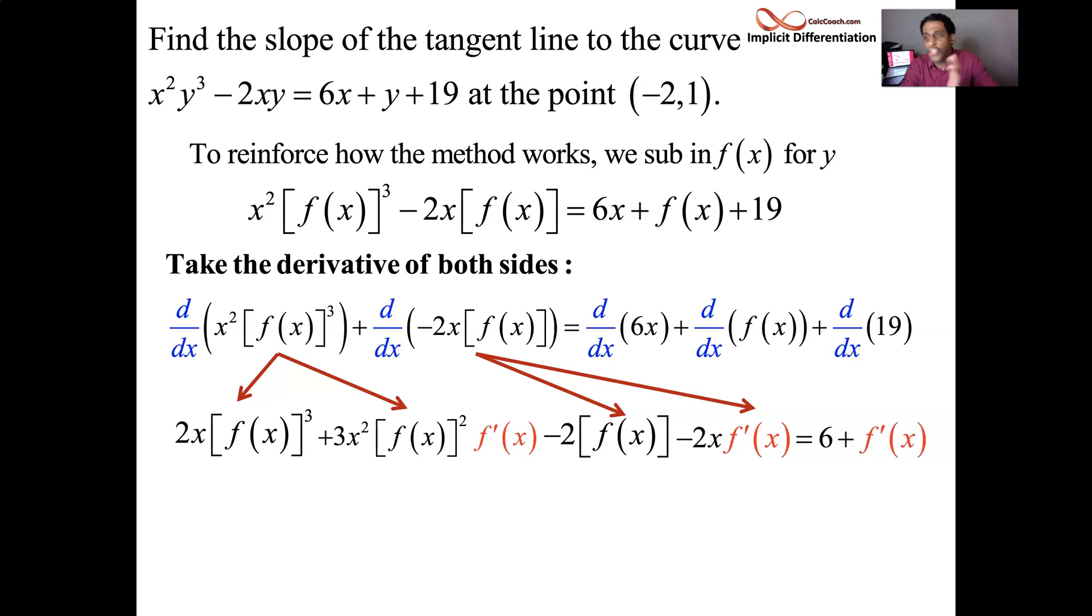I purposely color-coded f prime of x so that we can isolate, find out where these guys are, pull them on the same side, isolate them, and solve. And so we're going to put all these terms on the left-hand side. The terms they don't have, we're going to move them to the right-hand side. So this first term, there's no f prime on that. It's going to go over to the other side by subtracting it, moving it over. The other terms are fine with the f prime in them. The f prime is on the right-hand side needs to be subtracted over. And there's one more term there, 2f of x needs to be shipped over to the right-hand side.